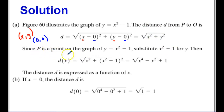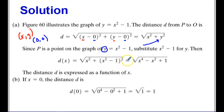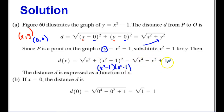Since P is a point on this specific graph — y equals x squared minus 1 — I'll substitute x squared minus 1 anywhere I see y. I end up with the square root of x squared plus the quantity (x squared minus 1) squared. I do not want to distribute an exponent — this means x squared minus 1 times x squared minus 1, not x to the 4th minus 1. After simplifying, I end up with the square root of x to the 4th minus x squared plus 1. That is my function d(x).